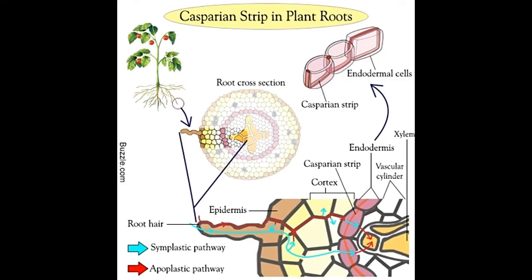The Kasparian strip is a ring-like thickening of certain parts of the endodermal cell walls in plant roots, which forces water and dissolved minerals to pass through the semi-permeable plasma membrane of these cells, rather than their cell walls.